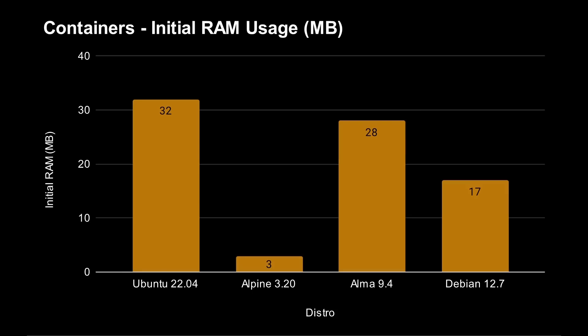The first category is containers. Containers are different to virtual machines and Linux running on bare metal — they use far less resources, which is one of the main attractions. It's still interesting to see which is the most efficient version of Linux for a container.